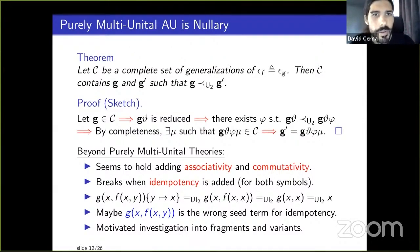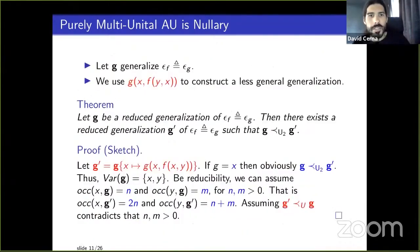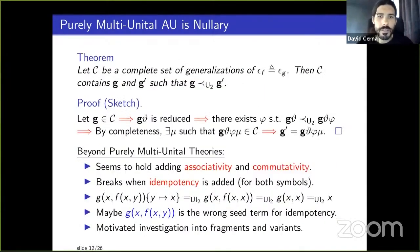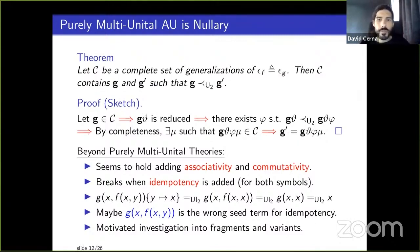Beyond purely unital theories: this seems to hold for associative and commutative theories — the generalization g(x, f(y,x)) appears a lot in the AC world and came up in our other papers. It breaks with idempotency when both symbols are idempotent; not so clear with one symbol. This motivated looking at fragments of the theory.